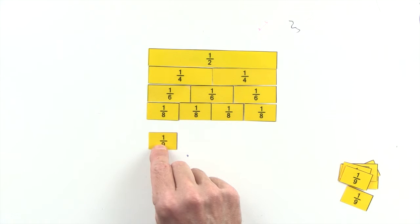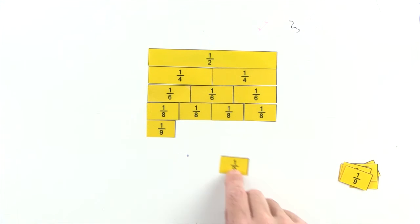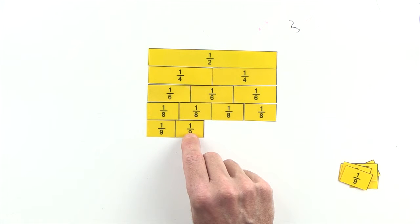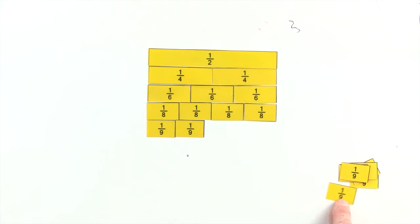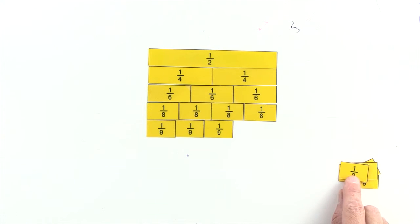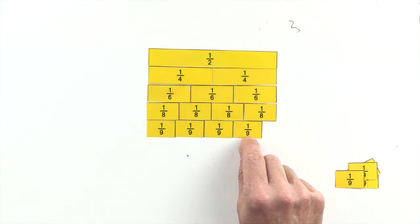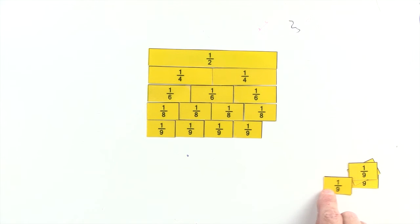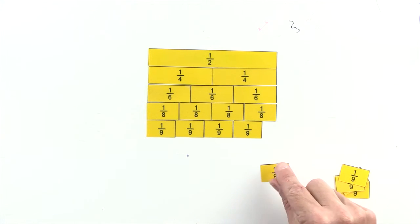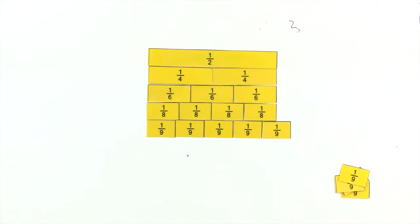One ninth, two ninths, three ninths, and four ninths are less than one half. And five ninths is greater than one half. So we can't use ninths to make an equivalent fraction to one half.